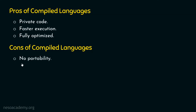The first disadvantage of compiled languages is no portability. The compiled language is not portable. Whenever we generate an executable after compilation, that executable is capable of running on a specific type of machine only. For example, if I compile my code on a Windows machine, I will get an executable capable of running on Windows only — not on Mac or Linux.